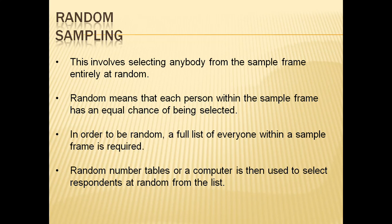The target population would be all dental students — it could be a state or a country. The sampling frame would be the college or colleges where the study is happening. The sample is the actual number of people where the study will occur. So the numbers reduce: target population is the largest, sampling frame is smaller, and the sample is the smallest group.